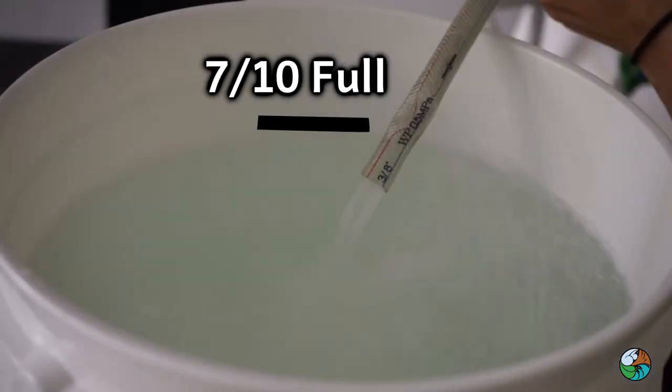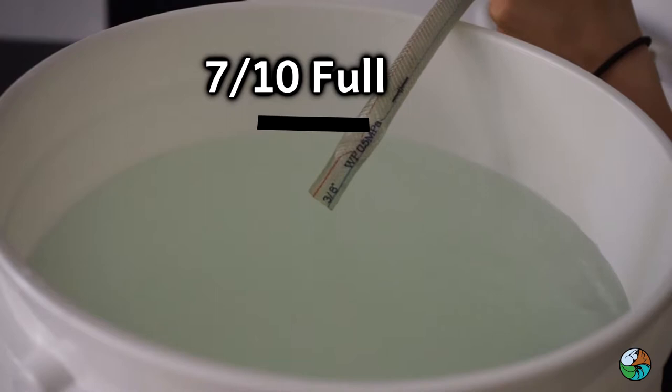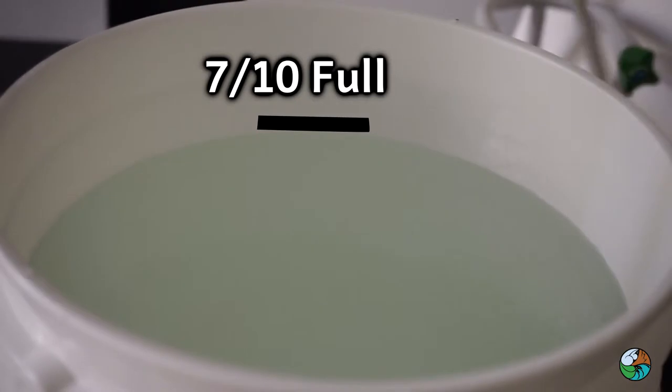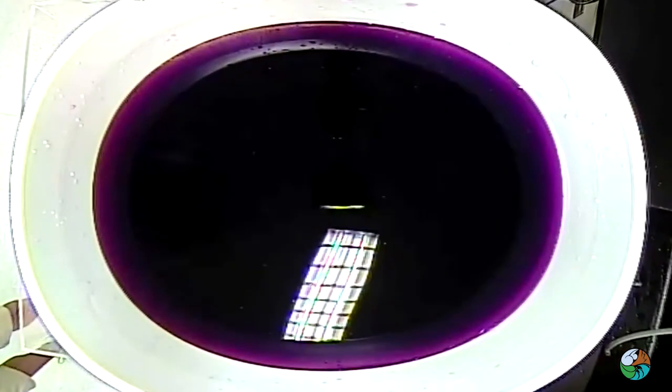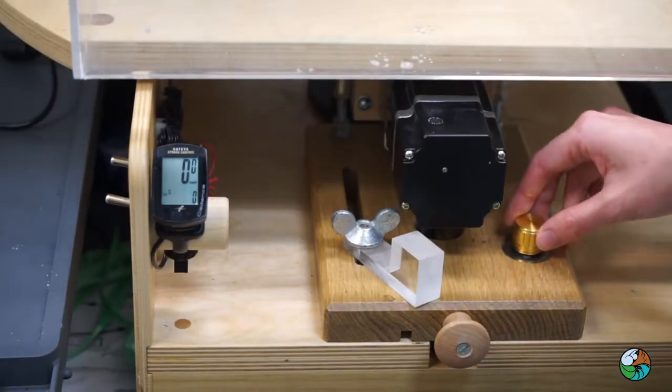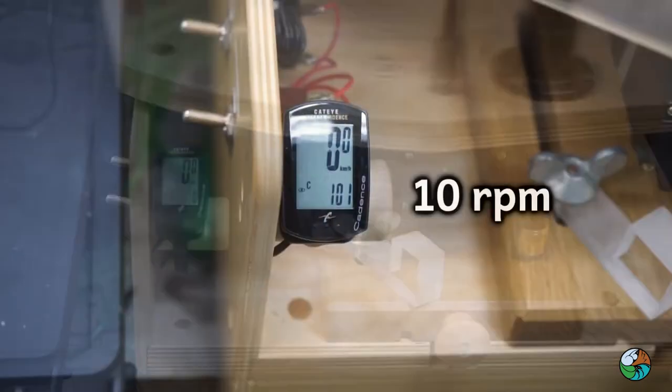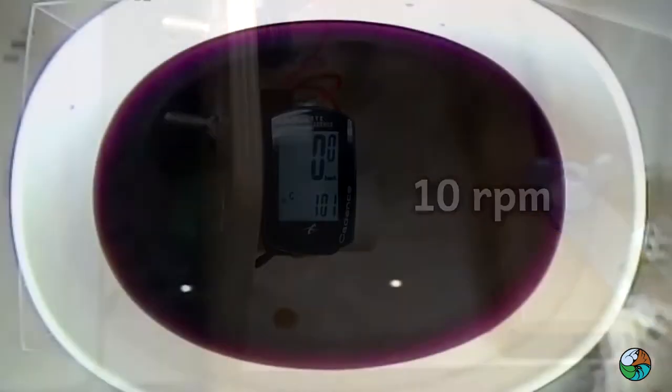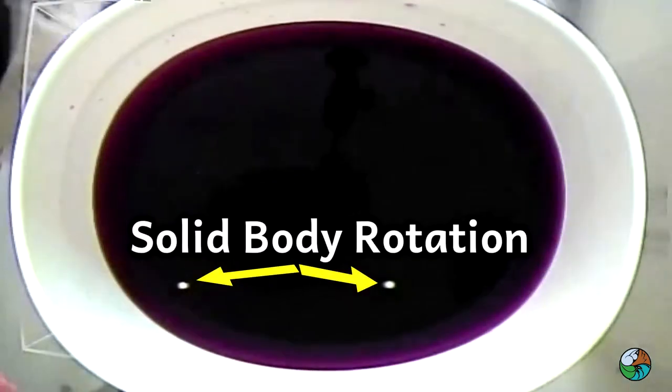After that, fill the bucket with water until it is 7 over 10 full. Dye the water to produce a better visualization of the experiment. Set the table into rotation with a rate of about 10 revs per minute. Wait until the system reaches solid body rotation.